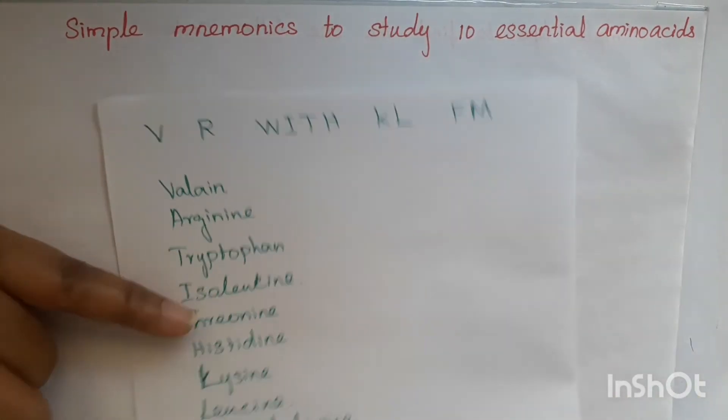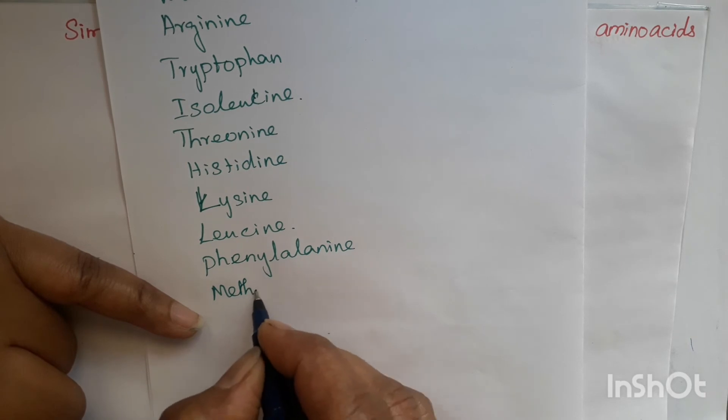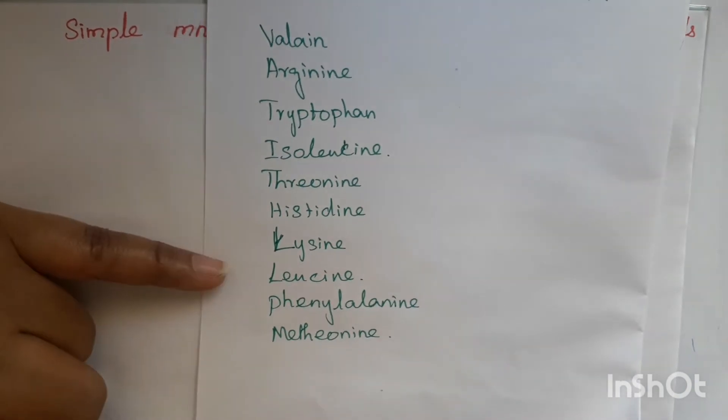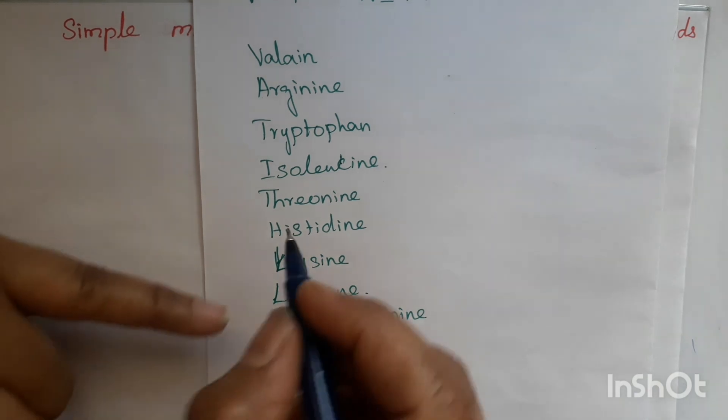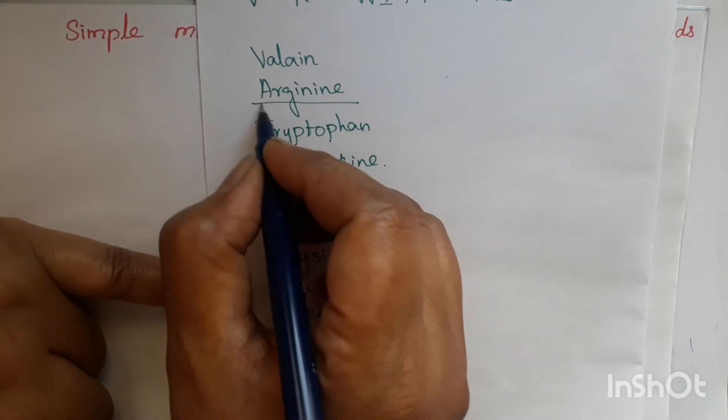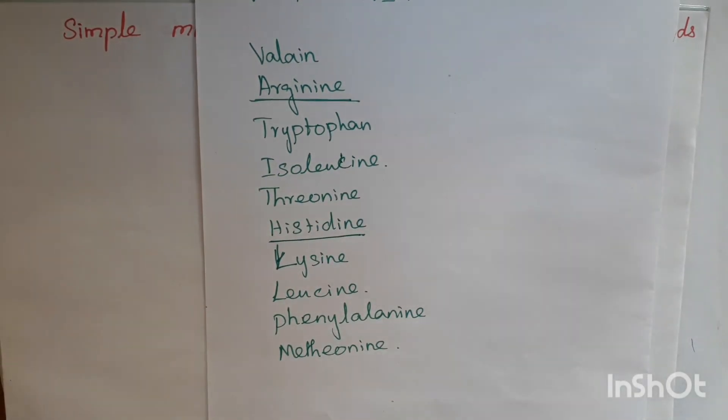M for Methionine. That's it. Now this 10 is essential amino acids. Particularly semi-essential is histidine and arginine.